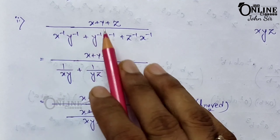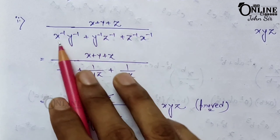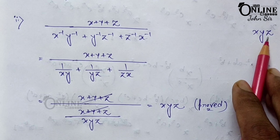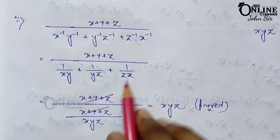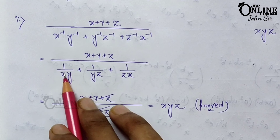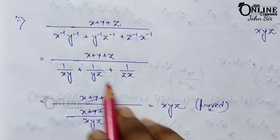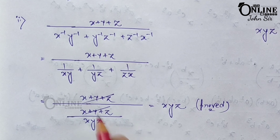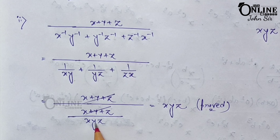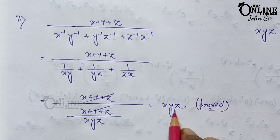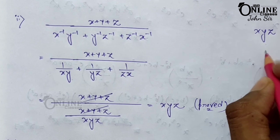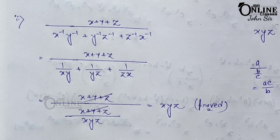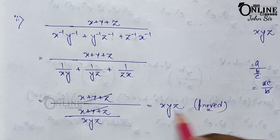Sum 21.2: (x+y+z) ÷ (x^(−1)y^(−1) + y^(−1)z^(−1) + z^(−1)x^(−1)). Denominator = 1/(xy) + 1/(yz) + 1/(zx). LCM is xyz, giving (z + x + y)/xyz = (x+y+z)/xyz. Dividing: (x+y+z) × xyz/(x+y+z) — (x+y+z) cancels — leaving xyz. Proved equal to xyz.